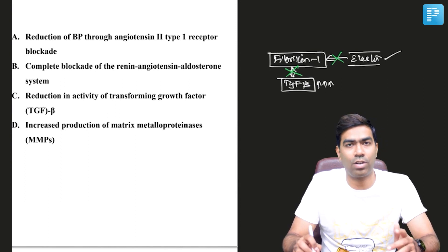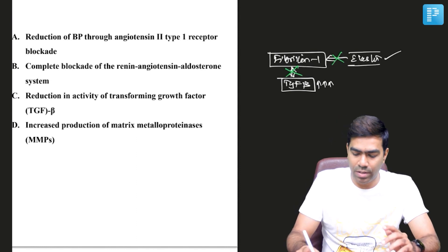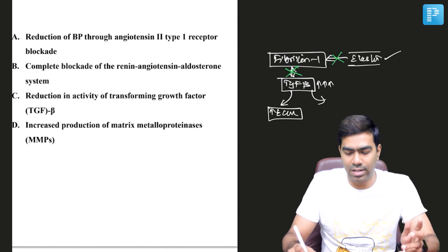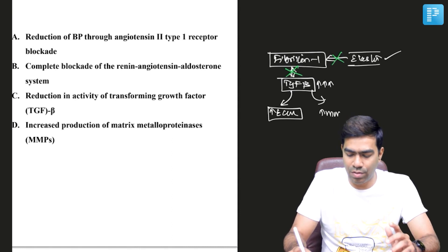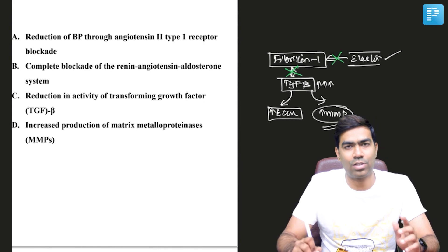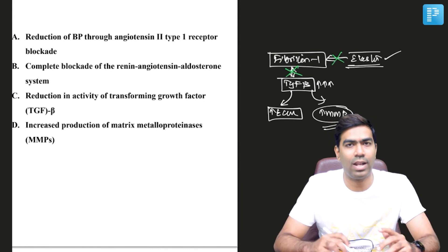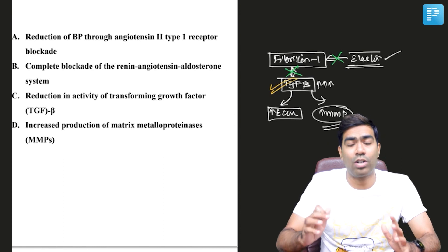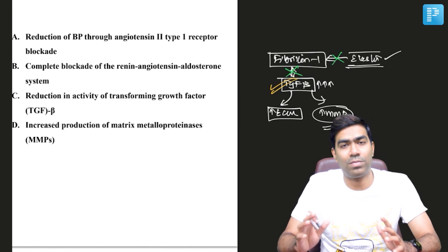This increased TGF-beta results in increased deposition of extracellular matrix and increased activation of matrix metalloproteinases, which causes disintegration of the matrix and elastin. High TGF-beta is a cornerstone for problems in Marfan syndrome.